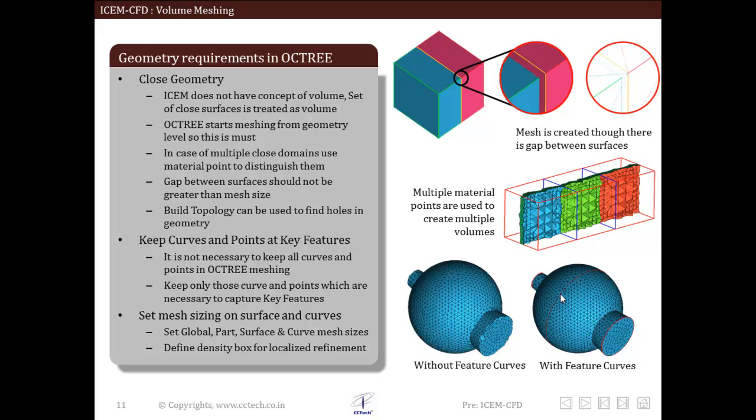If domain contains multiple volumes, it can be defined by using multiple material points. For example, this figure shows domain which constitutes three separate volumes. They are defined by specifying multiple material points. Volume elements will be assigned part depending on the material point. One or more material points can be put in a single part.